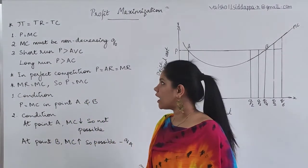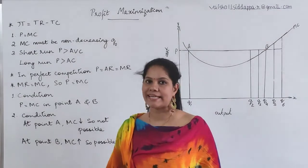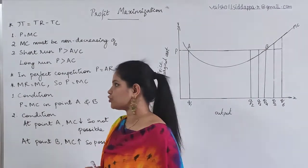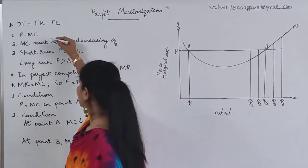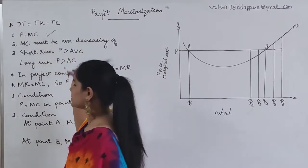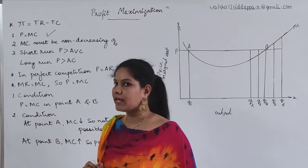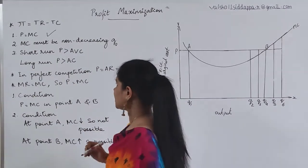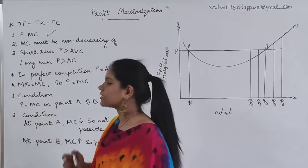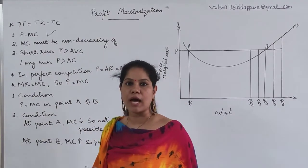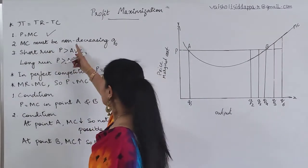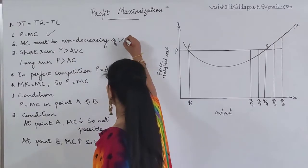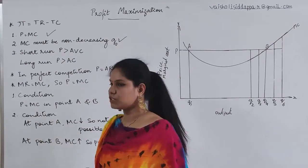They have asked for exactly two conditions. The two conditions are: first, P should be equal to MC; and second, MC must be non-decreasing at Q0.